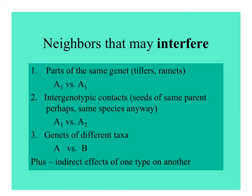There are different kinds of neighbors that might provide interference or competition. It could be parts of the same genetic individual — tillers or ramets — so we could have A1, one genotype versus itself. There could be different genotypes of the same species, A1 versus A2, which could be siblings or very unrelated. And then there are genets of different taxa, A versus B, as well as indirect effects of one type of plant on another.